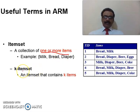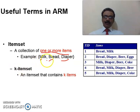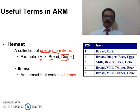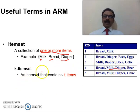What is a k-item set? Taking the same example with three items — milk, bread, and diaper — if there are three items in the set, then k equals three, so it is called a three-item set. If we take two items such as milk and diaper, then milk and diaper form a two-item set, since the set contains two items.